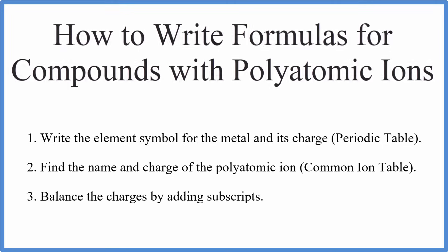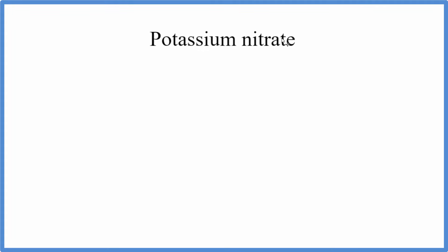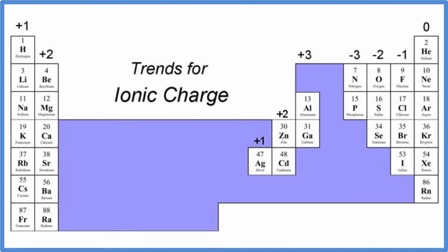We'll write the formula for potassium nitrate. For potassium nitrate, we know potassium is a metal, and then nitrate is a group of nonmetals, a polyatomic ion. And we know that because it ends in A-T-E. We go to the periodic table, and for potassium, the symbol is K. We can also look at the charge. It's in group 1, so its charge is plus 1.